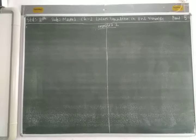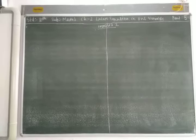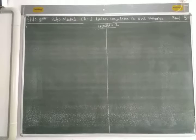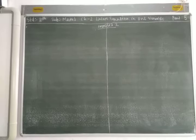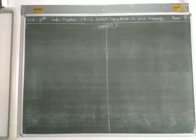The next question is question number 4b. Lakshmi is a cashier in a bank. She has currency notes of denominations 100, 50, and 10 rupees. The ratio of the number of notes is 2:3:5. The total cash with Lakshmi is 4 lakhs. How many notes of each denomination does she have?